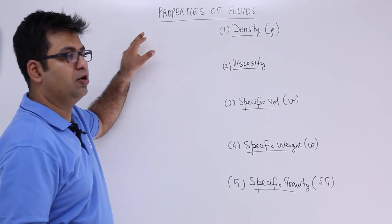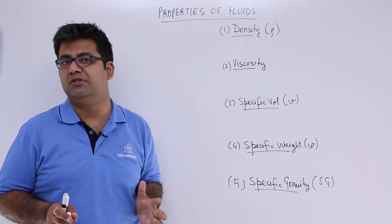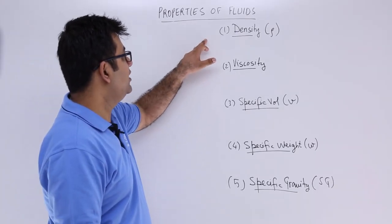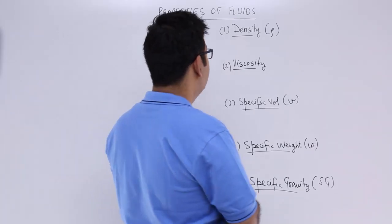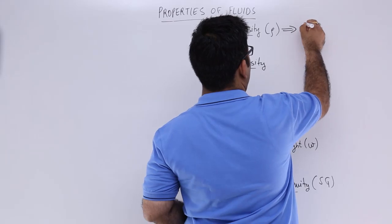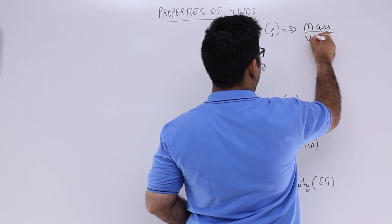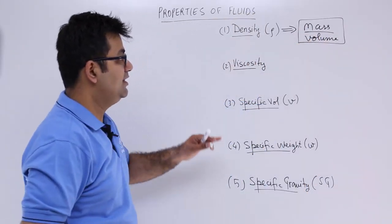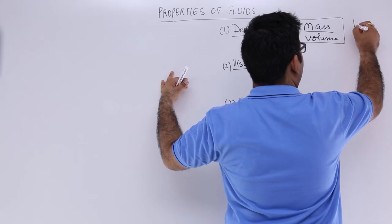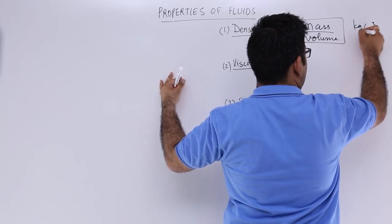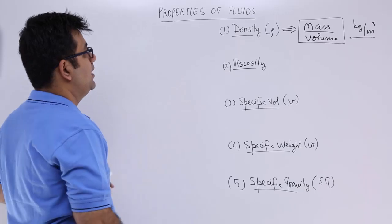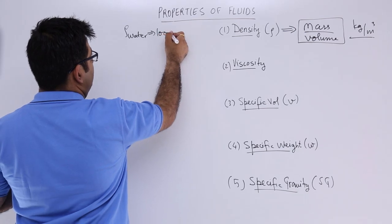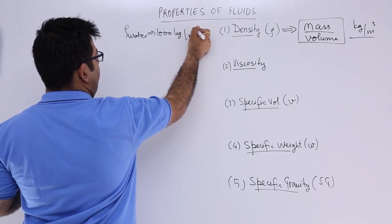Now let's talk about the properties of fluids. There are many properties of fluids but we will focus on these important five. The very first one is density. Density is basically the mathematical ratio of mass upon volume. This means that the unit of density would be kilogram per meter cube. So density of water is a constant value — 1000 kilogram per meter cube.